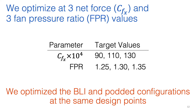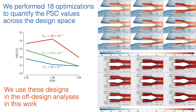In previous work, we optimized the designs at combinations of three net force and fan pressure ratio values for a total of nine designs for both configurations. With this approach, the net force value was used as a parameter to control how much of the total thrust was supplied by the BLI fan compared to the underwing engines. Using these 18 optimizations, we computed the PSC values for nine design points in previous work, and we use these 18 designs for the results in this presentation.